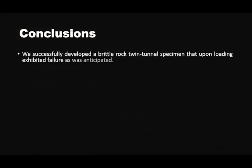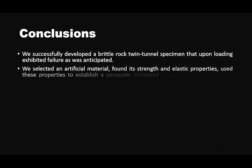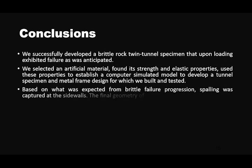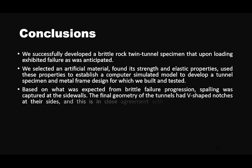In a team of four, we successfully developed a brittle rock twin tunnel specimen that upon loading experienced failure as was anticipated. We selected an artificial material, found its strength and elastic properties, used these properties to establish a computer simulated model to develop a tunnel specimen and metal frame design for which we built and tested. Additionally, based on what was expected from brittle failure progression, spalling was captured at the side walls. The final geometry of the tunnels had V-shaped notches at their sides and this is in close agreement with our numerical modeling results.